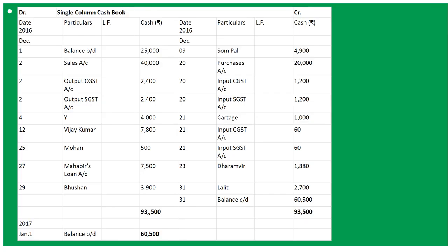On December 21st, paid cartage rupees 1,000. So 'By Cartage Account', 'By Input CGST Account', 'By Input SGST Account' on the same date. Cartage amount is 1,000, and Input CGST will be 6% of 1,000, Input SGST will also be 6% of 1,000.